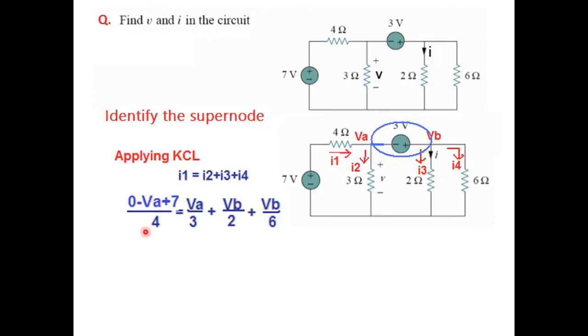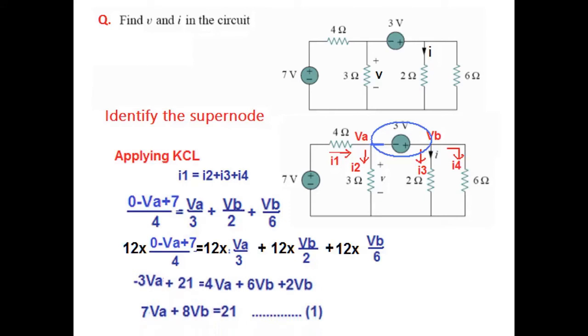Now we will follow the same technique. What is the LCM here? You can see that the LCM is 12. So we multiply everything by 12. And then we simplify. So you can cut 4 and 12 and 3 and 12 and 2 and 12 and 6 and 12.